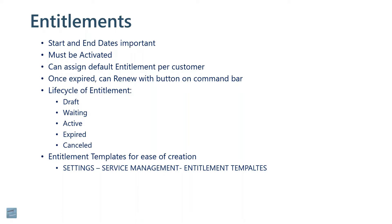That leads us to the lifecycle of entitlements. As they're created, they go from draft to waiting, to active, to expired. Draft means you just created it. Once you activate it, as long as the start date hasn't been reached yet — you can set it up in advance — it's in waiting mode. Once that date arrives, it becomes an active entitlement, and of course it expires after the end date. You can also manually cancel an entitlement.